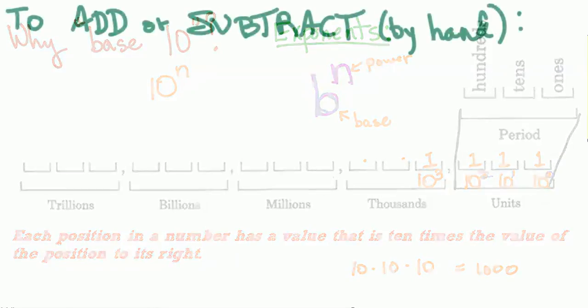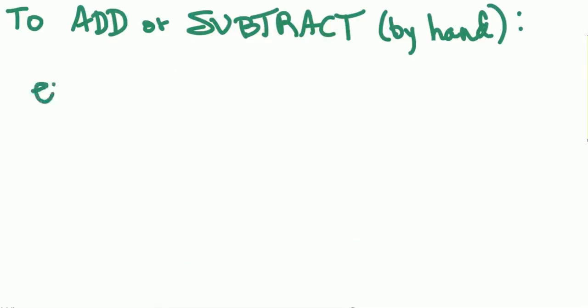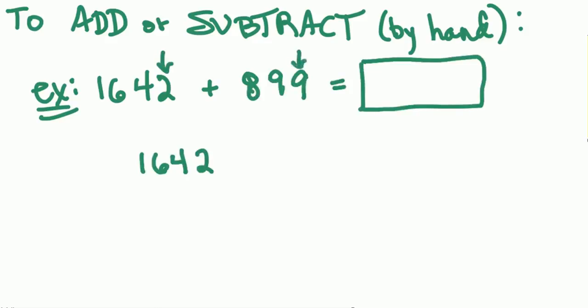So to add and subtract by hand, let me give you an example. I'll just show you by example quickly, and then I'll let you guys do your exercises. And so what if we have 1642, right? 1,642. And we would like to add to that 899 in units and that nine here in units.